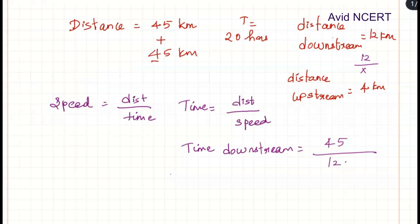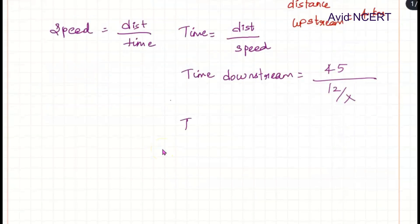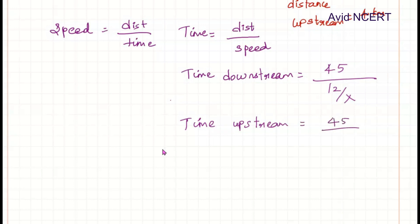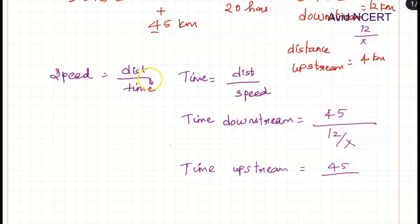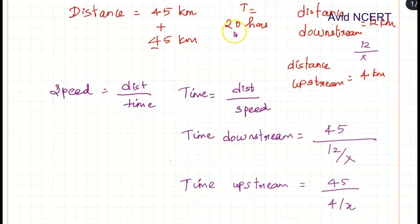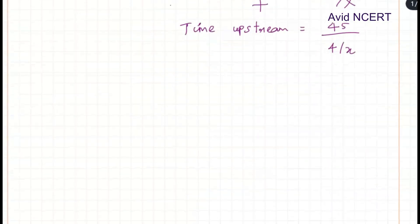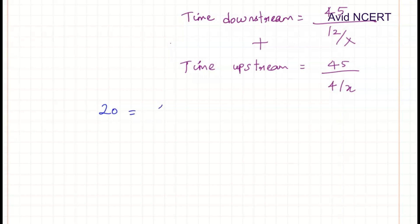So the downstream time is 45 divided by (12/x). To calculate upstream time, it is distance 45 divided by upstream speed, which is 4 divided by x. The total time of 20 hours equals the sum of downstream time and upstream time: 20 = 45x/12 + 45x/4.